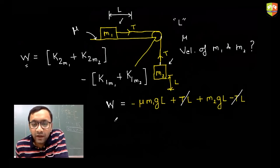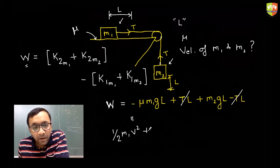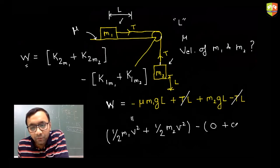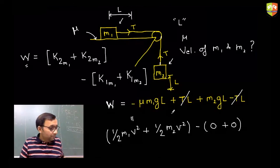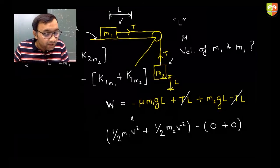Total work done equals change in kinetic energy. Final KE is ½m1v² plus ½m2v² (both have the same speed since connected by inextensible string). Initial KE is zero. Equate to get the velocity. The answer is independent of the coefficient of friction only if μ is treated correctly — multiply m1 by μ in Sukirth's answer and it is correct.